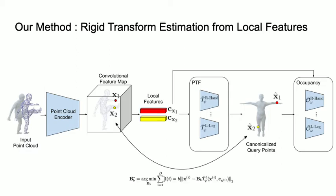Furthermore, given PTF predictions, we can estimate per-bone rigid transforms between the pose space and the canonical space using fast linear optimization. This can be used as an initialization for the subsequent optimization-based registration, which greatly improves the registration quality.